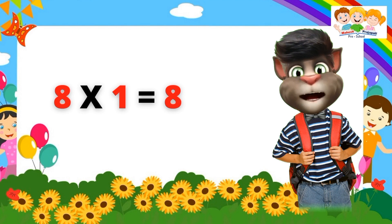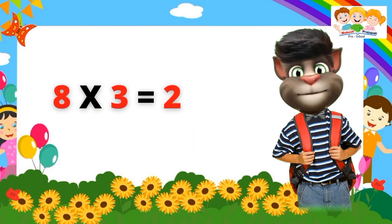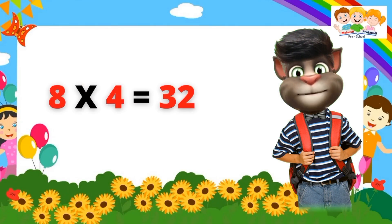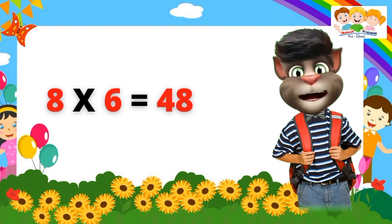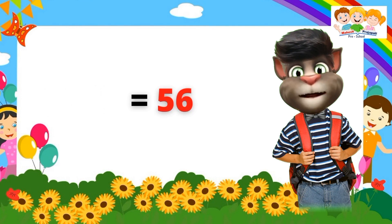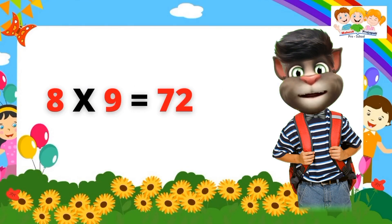Table of Eight. Eight one's are eight. Eight two's are sixteen. Eight three's are twenty-four. Eight four's are thirty-two. Eight five's are forty. Eight six's are forty-eight. Eight seven's are fifty-six. Eight eight's are sixty-four. Eight nine's are seventy-two. Eight ten's are eighty.